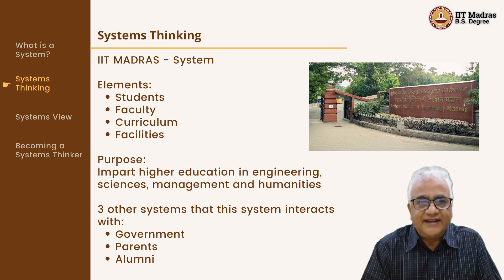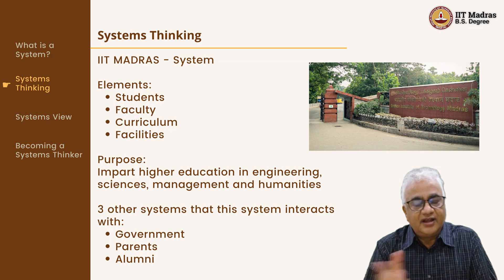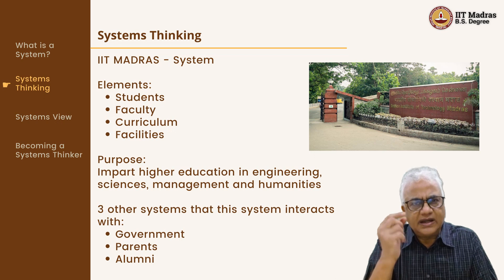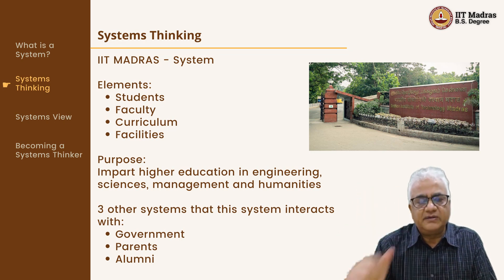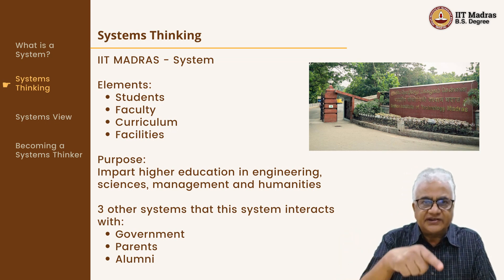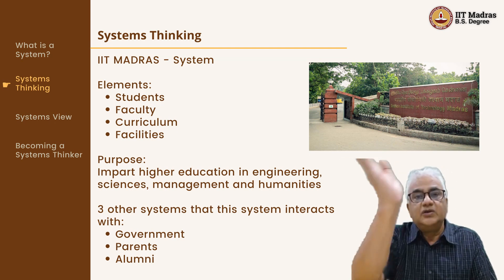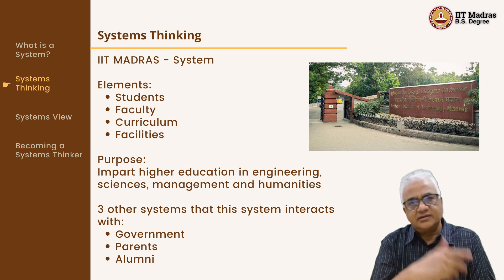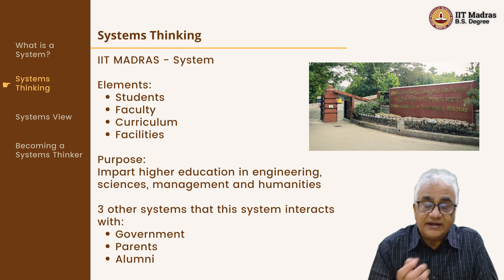You remove the students — the IIT collapses. Remove the faculty — IIT collapses. Remove curriculum — it collapses. Remove facilities — it collapses. One day there is no breakfast, students will protest and they will not be able to attend classes. One day there is no transportation or the cycle paths are all blocked — you can't go to class. One day if the faculty don't come to college, there is no class that day. See how they are all interconnected.